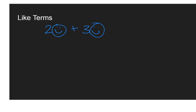We're going to start with a really basic example involving blue smiley faces. So here in this expression, I have two blue smiley faces, and to that I'm going to add three blue smiley faces. The question I want to figure out is how can I rewrite this so that I know how many blue smiley faces there are? Essentially I'm trying to rewrite this in a simpler way.